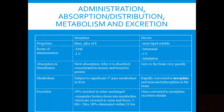In terms of excretion, 10% of morphine is excreted in the urine unchanged; the remainder is broken down into metabolites excreted in the urine and feces. The half-life is about two hours, and nearly all of what the individual takes is eliminated within 24 hours. For heroin, once it's converted to morphine in the brain, its excretion mirrors that of morphine.